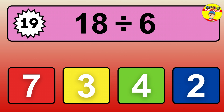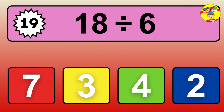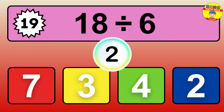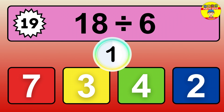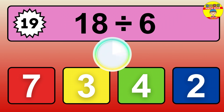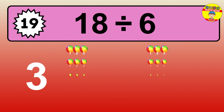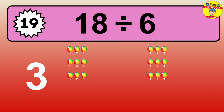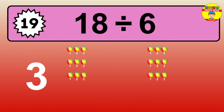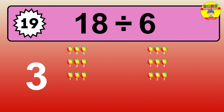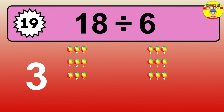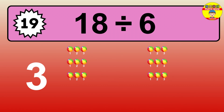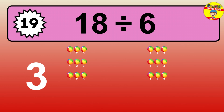18 divided by 6 is… time to think. Let's go to the solution. Divide the number 18 by 6. Each group contains 6 units. So, dividing 18 by 6 results in 3 equal groups. Thus, the result is… 18 divided by 6 equals 3.